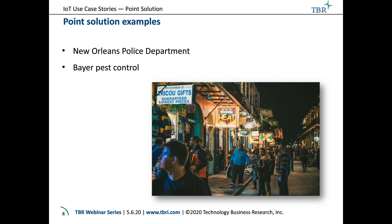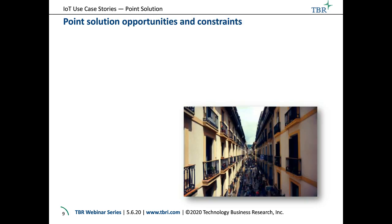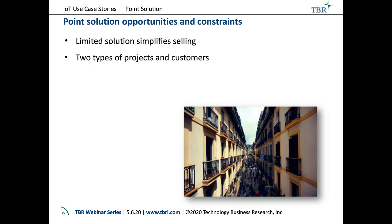The opportunities and constraints in this category of IoT solutions: the limited solution simplifies selling. You have a problem, you need a project to fix it, and our component or solution will solve that problem. You don't have to talk about ramifications, future growth, or integration — it just solves the problem. There are really two kinds of customers here: the first is the most common IoT scenario — a custom project where a customer has a problem, someone has an idea for a solution, and you make a transaction. The other category is packaged and bundled solutions, as with the Bayer pest control example.